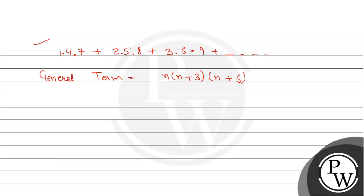Because if we put n = 1, it becomes 1·(1+3)·(1+6) = 1·4·7, which is the first term. So the general term is n(n+3)(n+6).